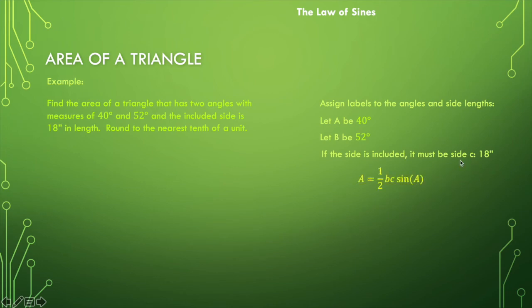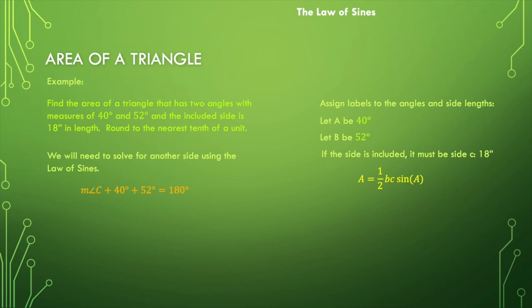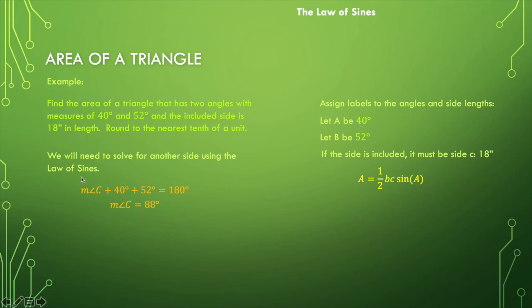We have two angles and a side length, but the formula requires two side lengths and the included angle. So we need to find an additional side. First, let's find the remaining angle: angle C plus 40 degrees plus 52 degrees equals 180 degrees, so angle C equals 88 degrees. Now we have all three angle measures. We need one more side length, and we'll use that angle measure to apply the law of sines.